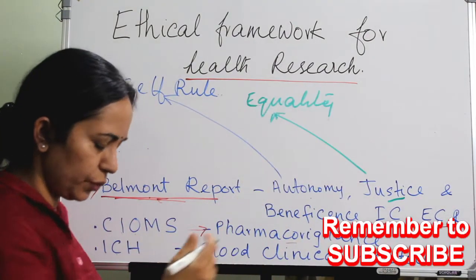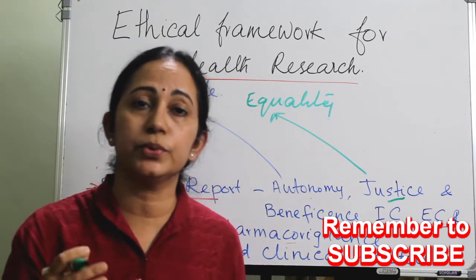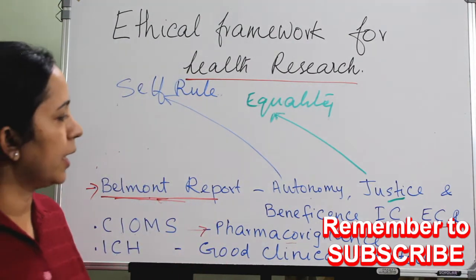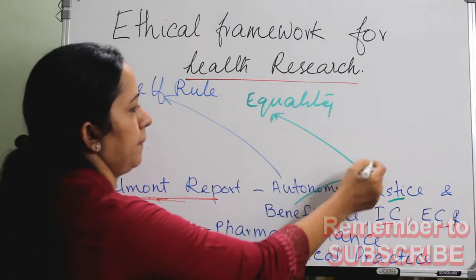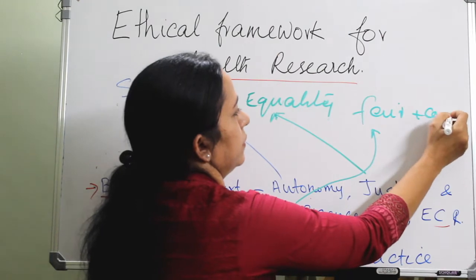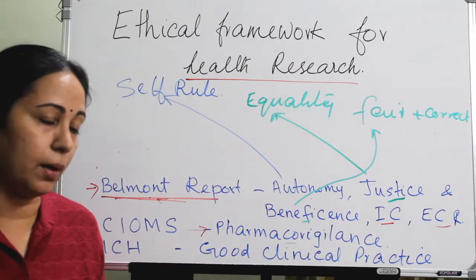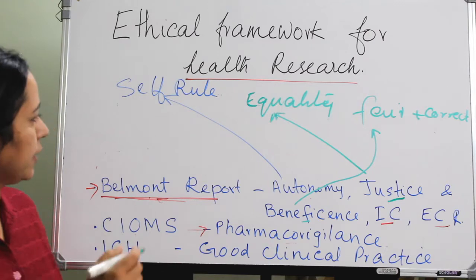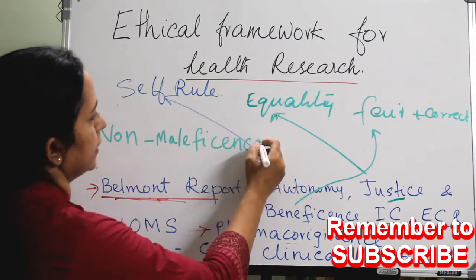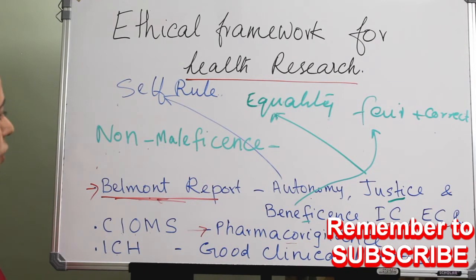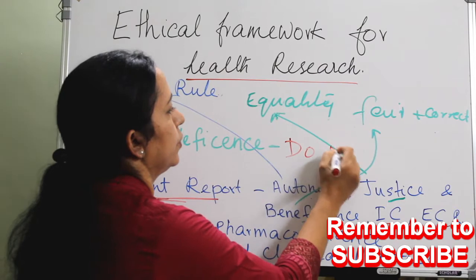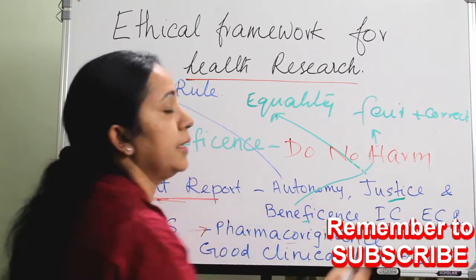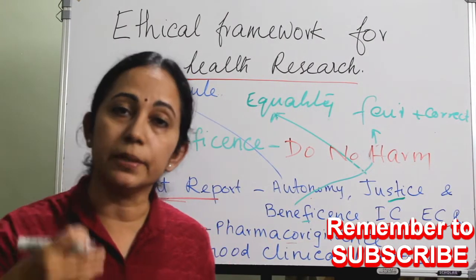Regarding Justice: if you are not allowing a certain ethnic group to be included in a particular study, that becomes an act against justice. Beneficence means we should positively take every step to prevent harm to the participant and ensure good in all our actions. Non-maleficence means 'do no harm' — in every study we should make every effort to do no harm to the participant, and if any harm is anticipated, it should be minimized to the maximum extent.